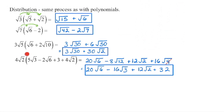Multiplying the term outside into the bracket: 4 times 5 is 20, and 2 times 3 is 6. 4 times negative 2 is 8, and 2 times 6 is 12. 4 times 3 is 12, and since there's no radical in that term, it's just 12 times the square root of 2. 4 times 4 is 16, and 2 times 2 is 4, which is a perfect square. Square rooting it gives 2, and 2 times 16 is 32.